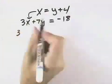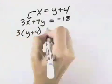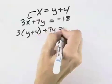So that we'd have 3, but instead of x, we'd have y plus 4. And then we leave our 7y and negative 18.